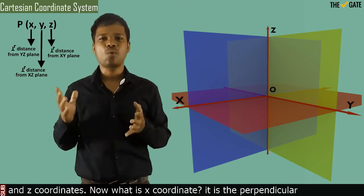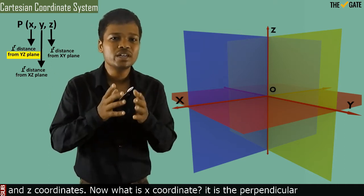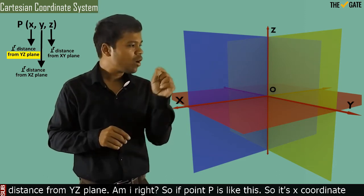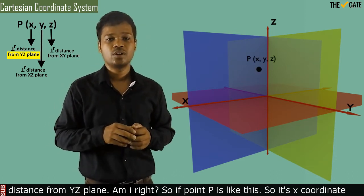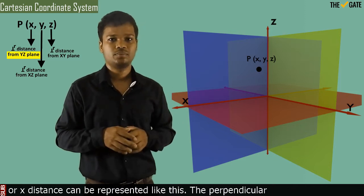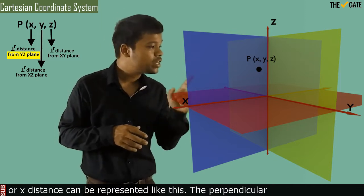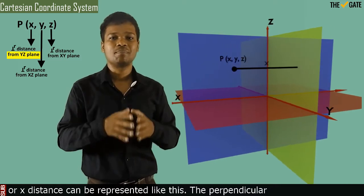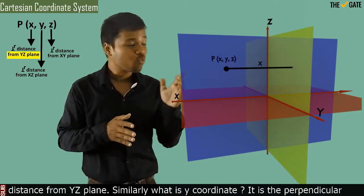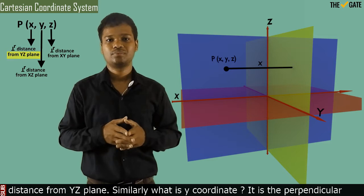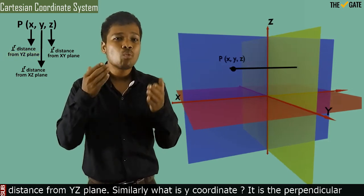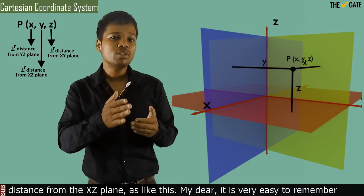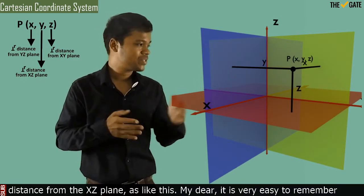What is the x coordinate? It is the perpendicular distance from the y-z plane. So if point B is like this, its x coordinate can be represented as the perpendicular distance from the y-z plane. Similarly, what is the y coordinate? It is the perpendicular distance from the x-z plane, as shown.